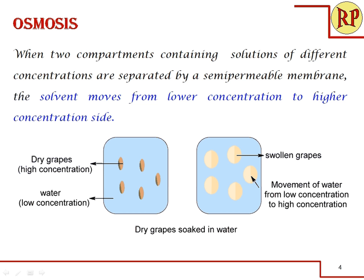Let us understand better with an example. Consider dry grapes soaked in a container of water. The concentration of minerals inside the grapes is higher than the concentration of minerals in the container of water. When we soak for a few hours, we see that the grapes are swollen. Why does this happen? The water from the compartment moves into the grapes. That is, the skin of the grapes acts as a semi-permeable membrane and the water moves from the lower concentration site to the higher concentration site. This is a natural process that happens with a minimum pressure, which we call osmotic pressure.